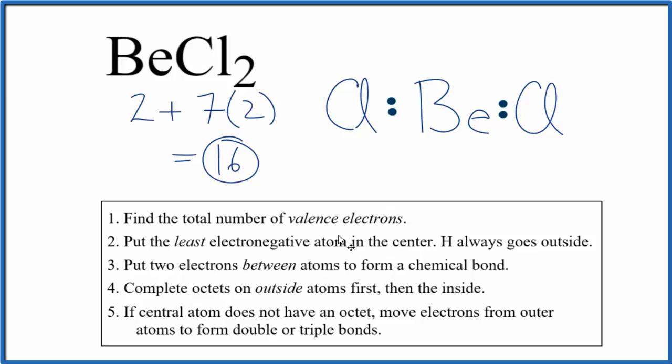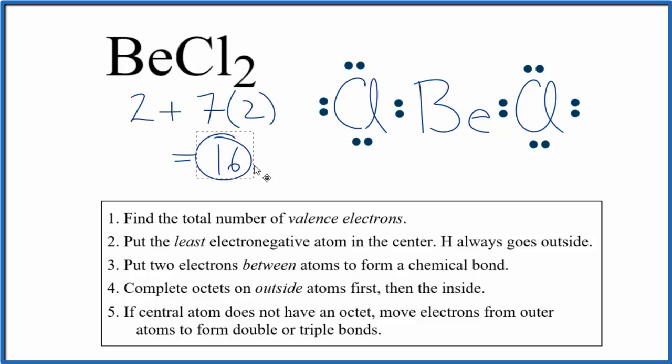Now we can complete the octets on the outside atoms, on the chlorines, like this. So at this point we've used a total of 16 valence electrons.